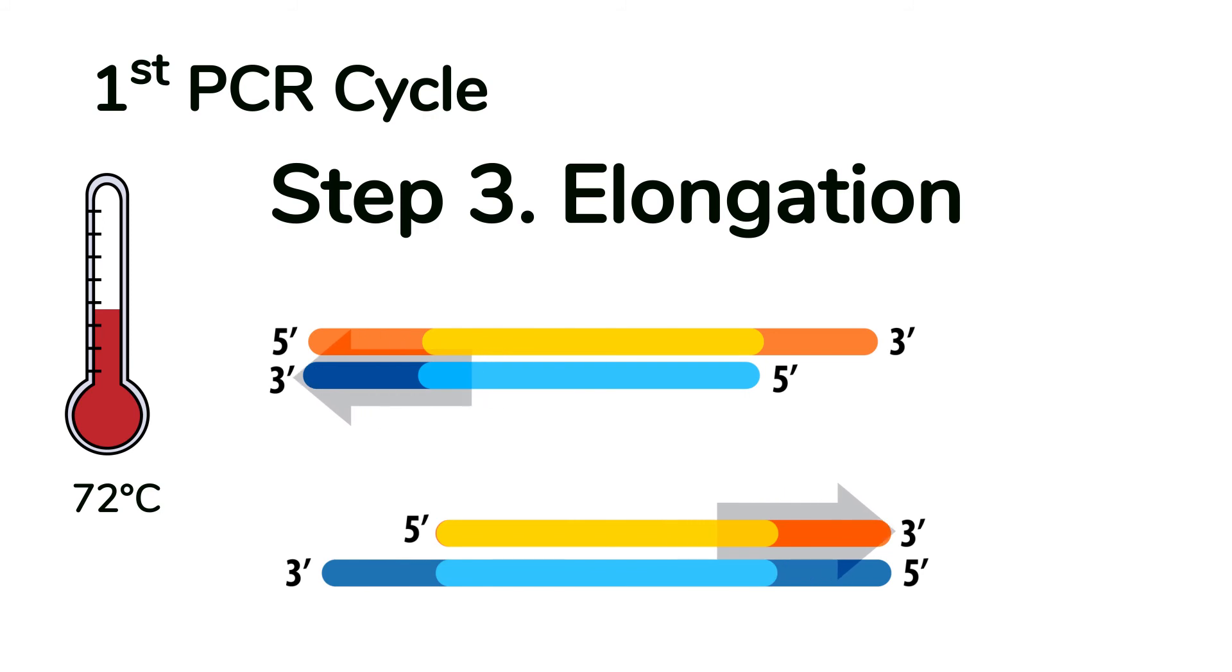The result of the first PCR cycle is a double-stranded copy of the region of interest, along with the remaining stretch of DNA past the region of interest, which are called the overhang products.